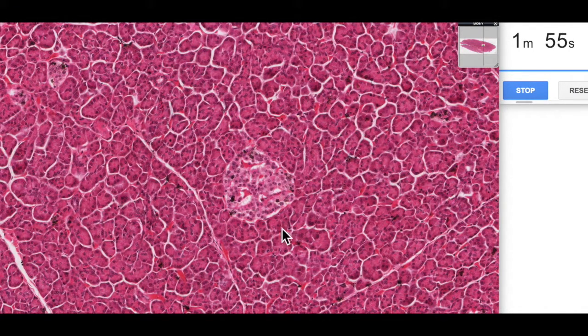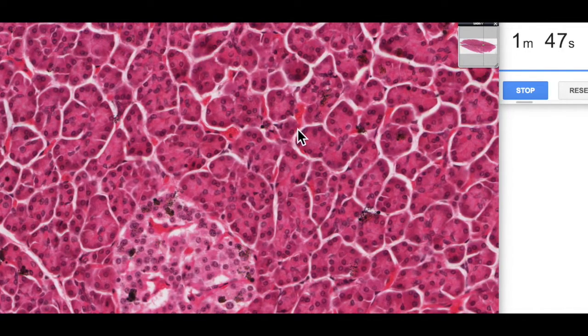Outside of the islets of Langerhans we have the majority of the tissue of the pancreas which is the exocrine pancreas and it's made up of all of these protein producing or serous only secretory acini. They look very similar to what we saw with the parotid salivary gland.